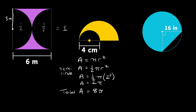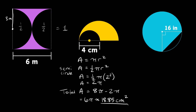To get the shaded yellow region, take the total area and subtract out the small semicircle: 8 pi minus 2 pi equals 6 pi. Plugging that into a calculator gives approximately 18.85 centimeters squared. That's the area of the shaded region.